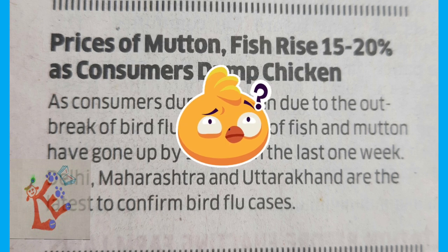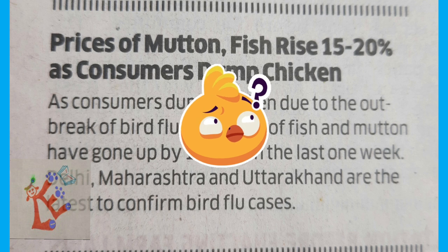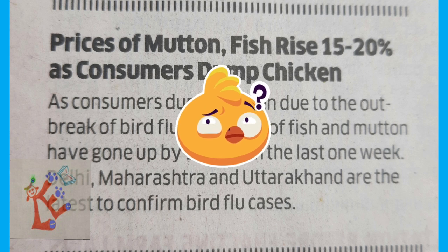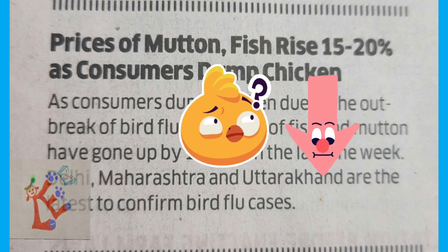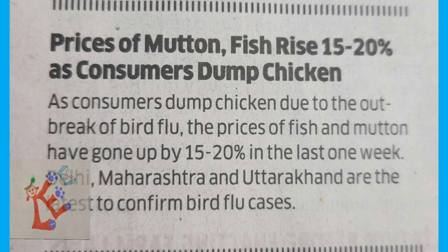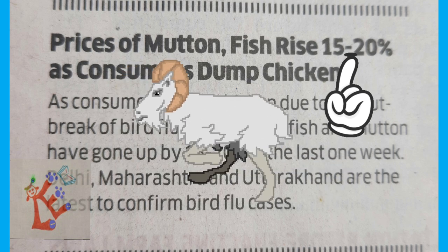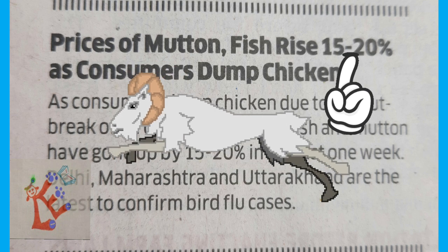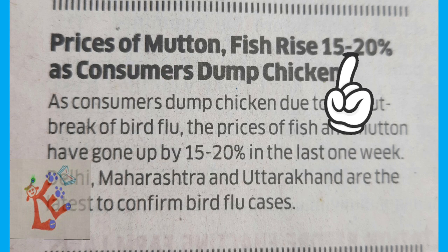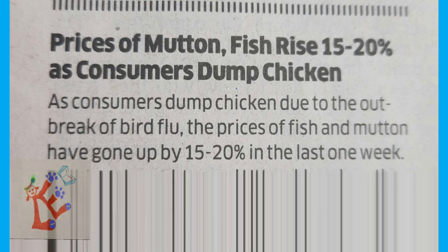The third news talks about 'Prices of mutton and fish rising 15 to 20 percent as consumers dump chicken.' This is microeconomics: demand for chicken has fallen due to the bird flu outbreak, so demand for mutton and fish has gone up, pushing their prices up by 15 to 20 percent. It's about individual goods — mutton, fish, chicken — their demand, supply, and price.